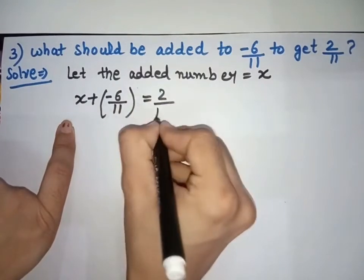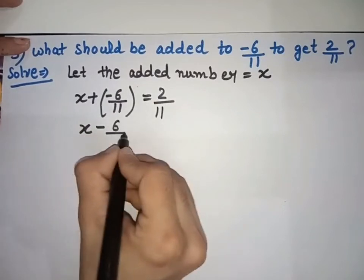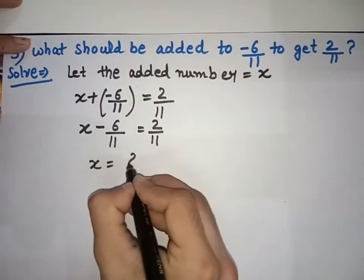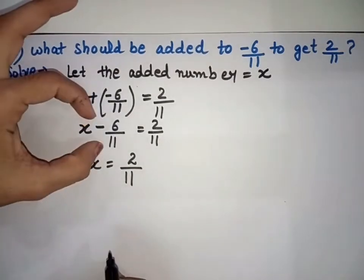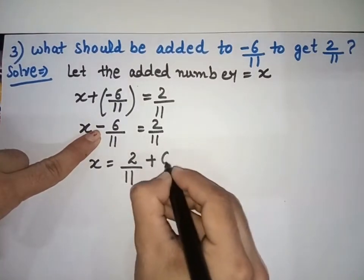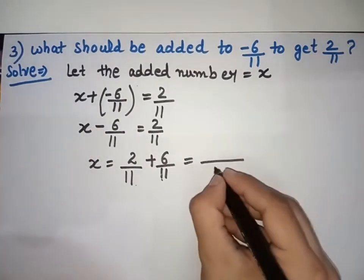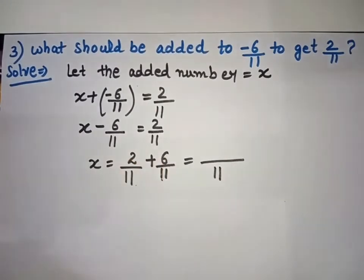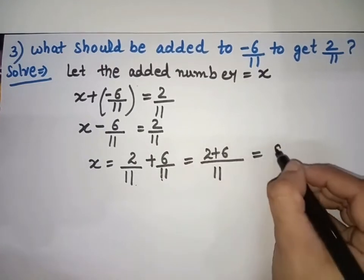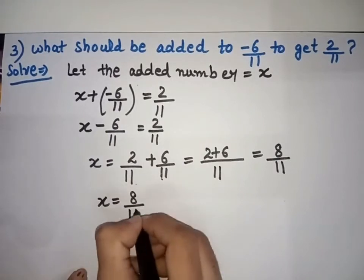Now, x equals 2 over 11 minus minus 6 over 11. The term minus 6 over 11 moves to the right-hand side and becomes positive 6 over 11. Now denominators are both 11, same. So we add numerators: 2 plus 6 equals 8. Answer: x equals 8 over 11.